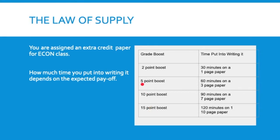If I offer a five-point boost and require a three-page paper, you might put in 60 minutes. If I offer 10 points, you'd put in 90 minutes to write a seven-page paper. For 15 points, you'd spend two hours writing a 10-page paper. This is the law of supply: as you get more payoff for your efforts, there's more effort you're willing to put in. Nobody is going to spend two hours writing a 10-page paper for just two points.